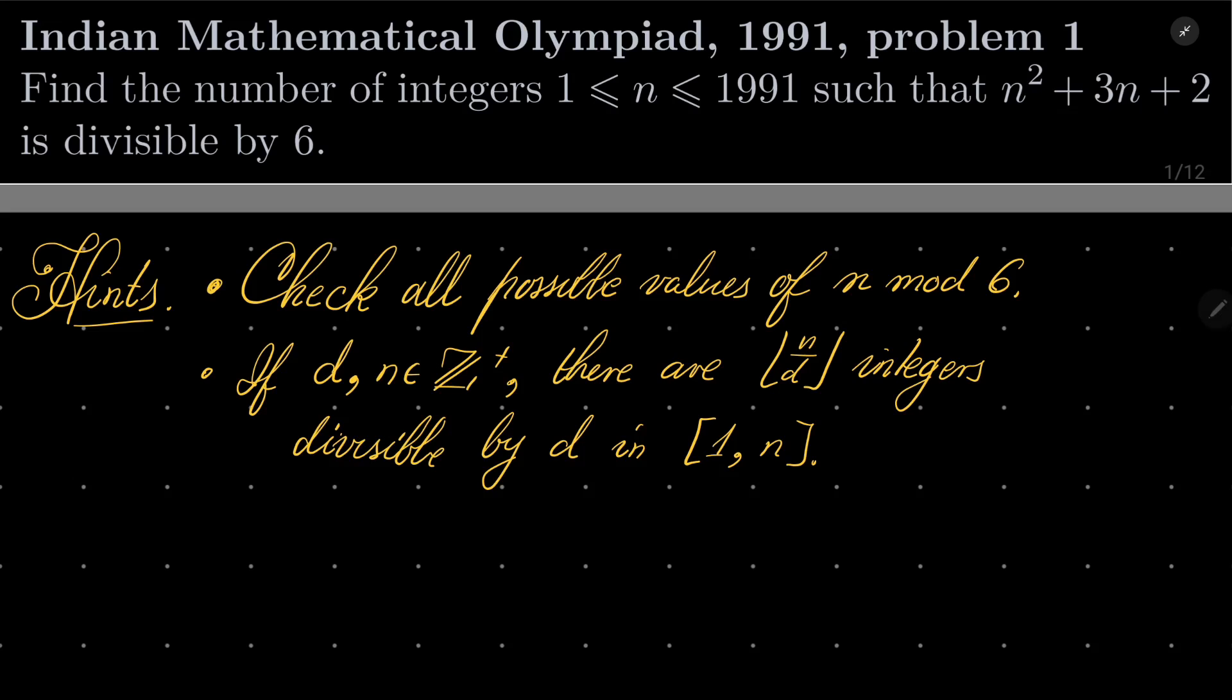And recall also that if we have two positive integers d and n, there are exactly floor(n/d) integers divisible by d in the interval from 1 to n. So give this problem a try and I will see you in just a minute.